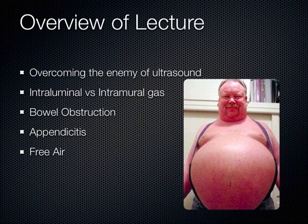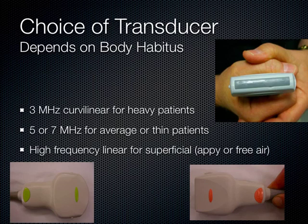But most of the time, the majority of patients don't have this body habitus and you can get into their abdominal areas with ultrasound. You can look at where the gas is — if it's in the lumen or inside the center of the bowel, that's normal. If there's air in the wall of the bowel, that's always abnormal and means the patient is usually very sick. Intramural means in the wall of the bowel. You'll see the words luminal and mural all over medicine. We can also see bowel obstructions, appendicitis, and sometimes even free air.